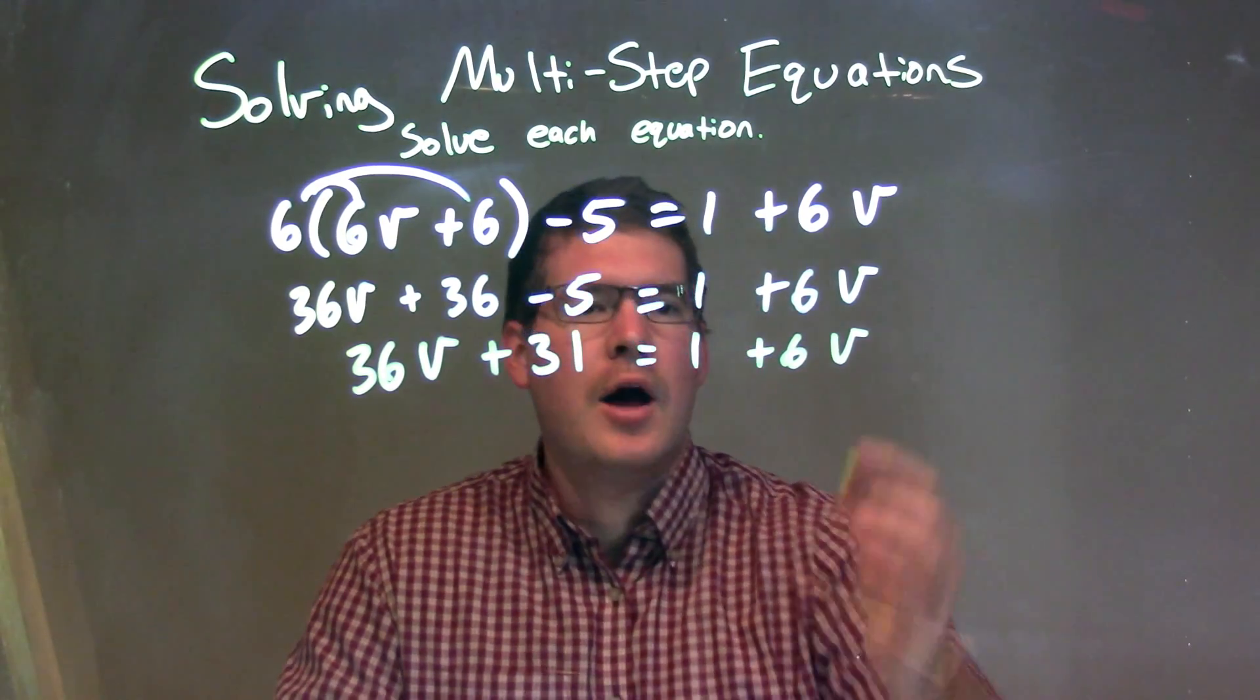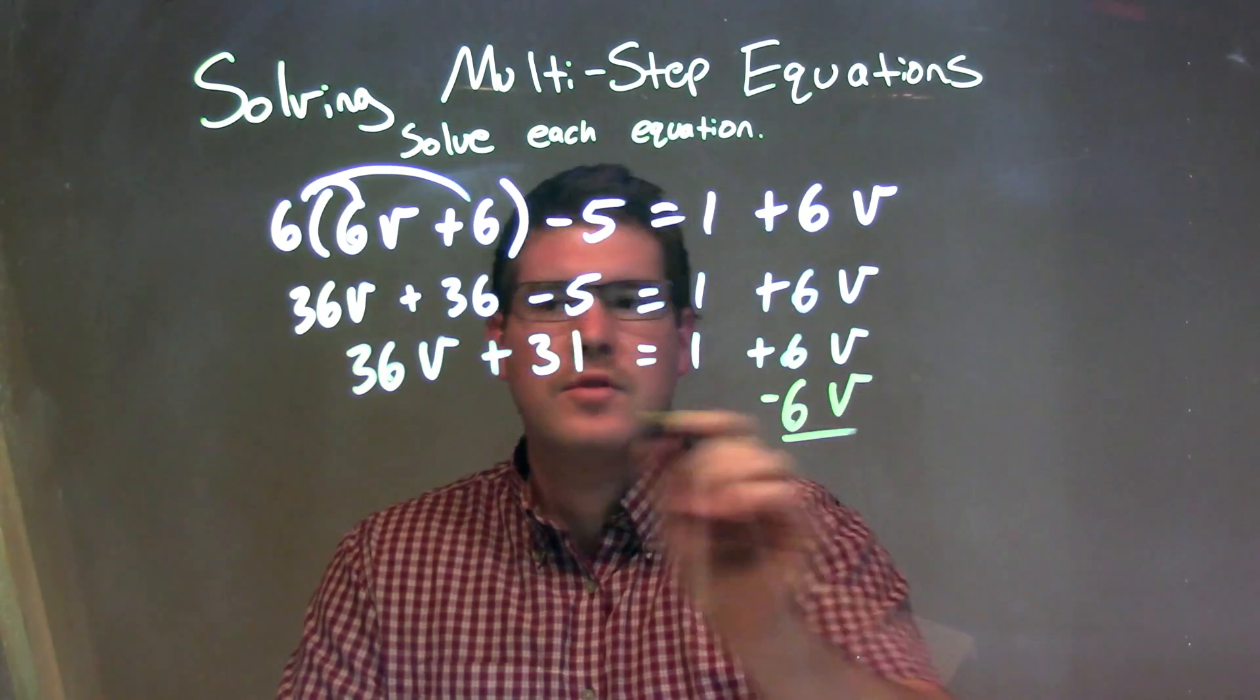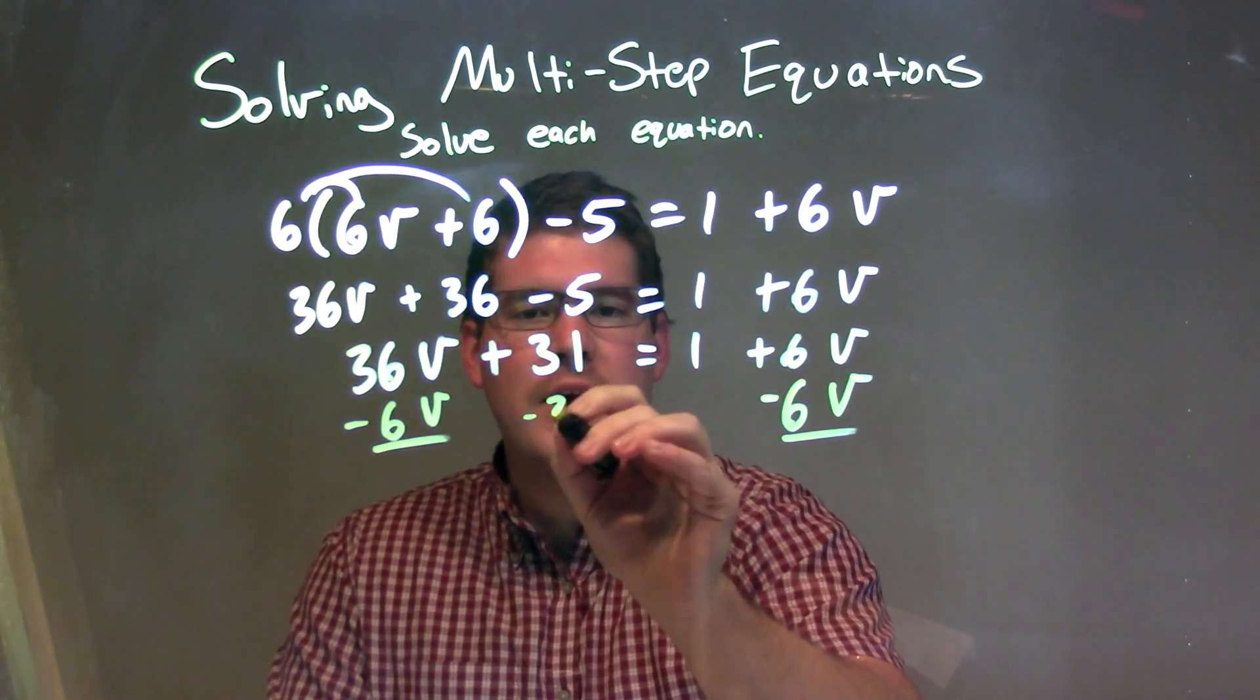So, now what I'm going to do, I'm going to bring my V's to the left and my numbers to the right. I'm going to subtract 6V to both sides now, all right? And then I'm going to subtract the 31.